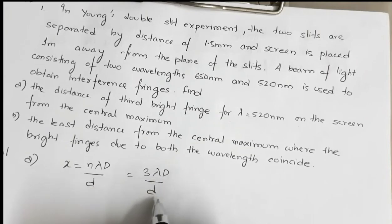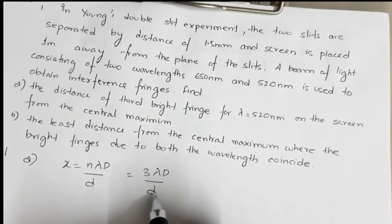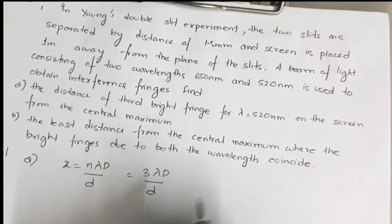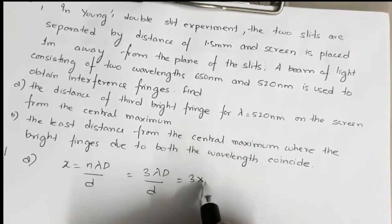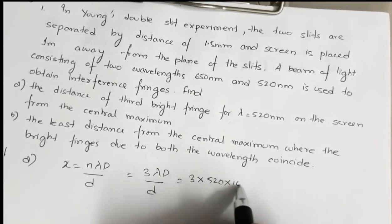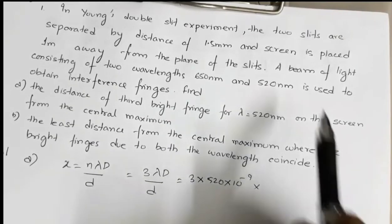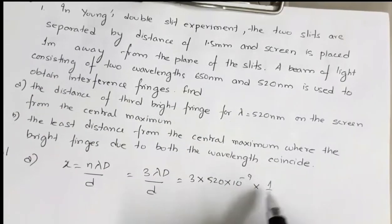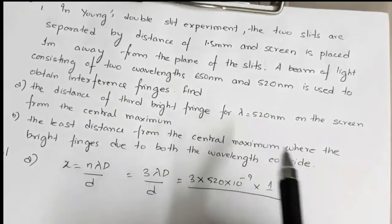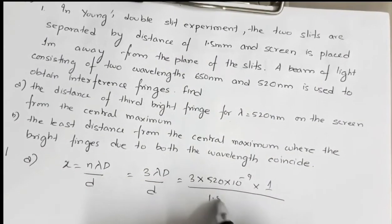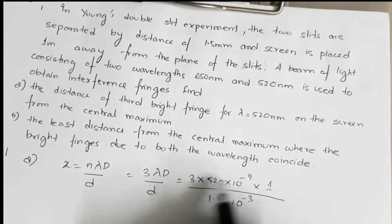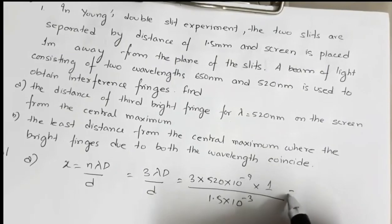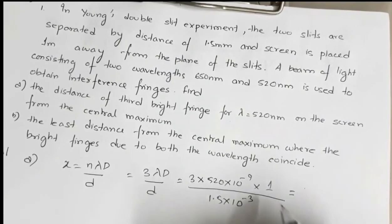For coherent sources, the ratio of intensities equals the ratio of widths of the two slits. We use: i_min/i_max = (√i1 − √i2)² / (√i1 + √i2)² = 9/25. Simplifying this gives i1/i2 = 16:1. So the ratio of widths of the two slits is 16:1.